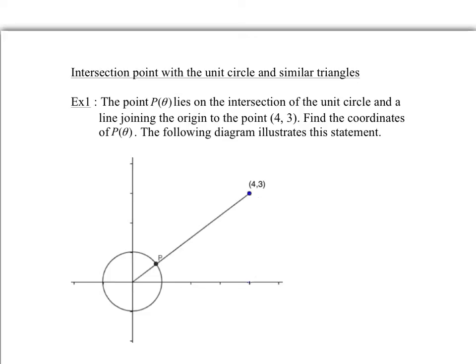This uses similar triangles from grade nine. There's a triangle with legs of length 4 and 3. Using the Pythagorean theorem: 4 squared plus 3 squared equals r squared, so 16 plus 9 equals 25, giving r equals 5. Since this is a length, we use r equals 5. There's a smaller similar triangle inside, where all angles are equal — they share the same angle, both have a 90-degree angle, so the third must match too.